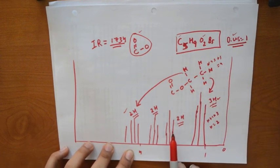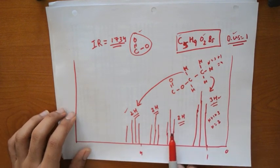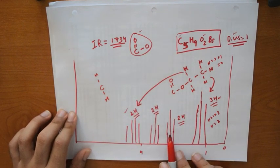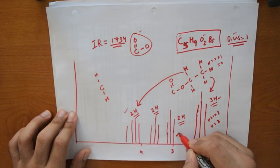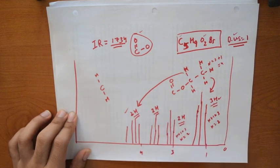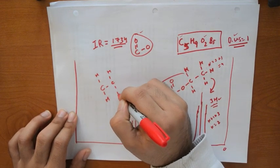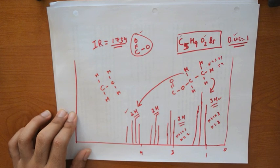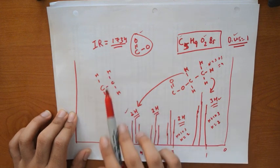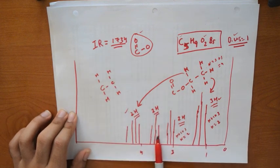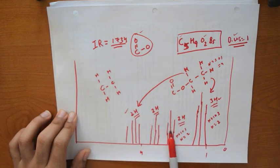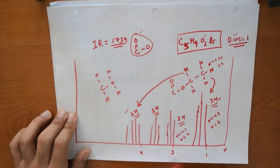Now we only have to account for these two peaks. We got two hydrogens split showing a pattern of 3, so n+1 in this case is 3, so n would be 2. These hydrogens are beside a carbon that carries two hydrogens. Same pattern here - these two hydrogens are beside another two hydrogens. These two perfectly line up.